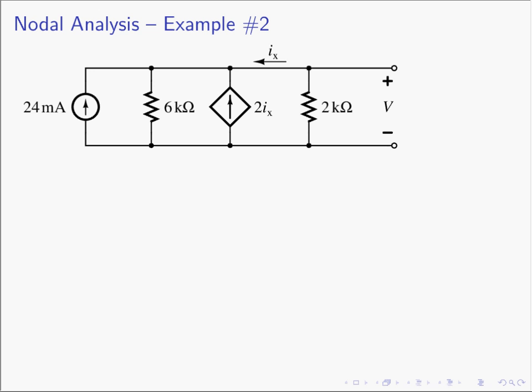Let's do example number two. Here we have a circuit with a node on the bottom and a node on the top, so n equals 2. From the recipe, I expect one equation and one unknown. Step two: select the reference node — both nodes are the same complexity, so we'll select the bottom. A voltage V has already been defined on the circuit, so we'll use that. Step three: there's only one other node and its voltage V is already given.